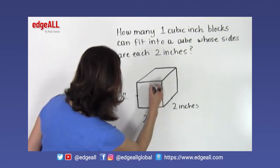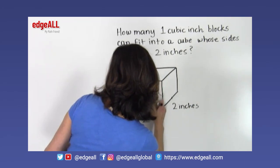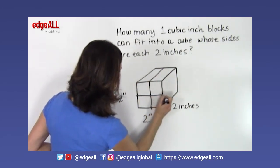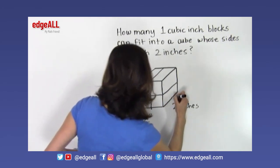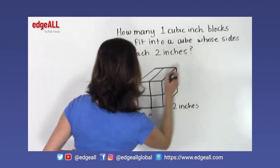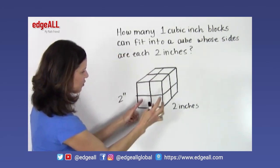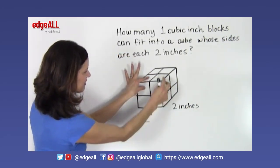And if I start to divide this up into how many 1 cubic inch blocks will fit in here, I can see that I would have in this front section here 1, 2, 3, 4.